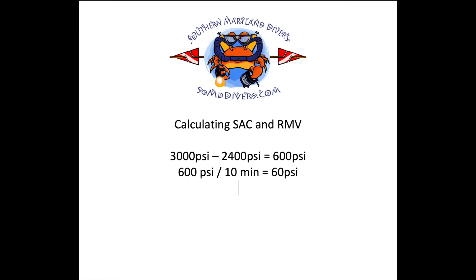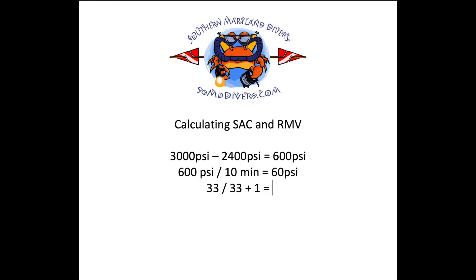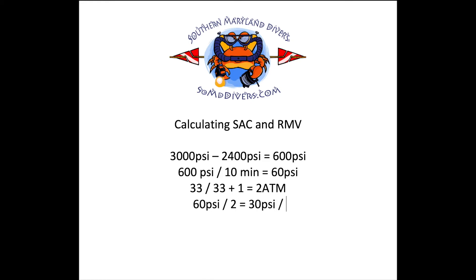We have to break our depth down into atmospheres. If you remember, 33 feet equals one atmosphere — that's why we use that for this example, it makes the math fairly easy, but with a calculator you could do any depth. We were at 33 feet, so we divide by 33 which equals 1, and then add 1 for the surface atmosphere, which brings us to 2 atmospheres of pressure. At this point, just divide the 60 psi by 2, and that equals 30 psi per minute — that is your surface air consumption rate.